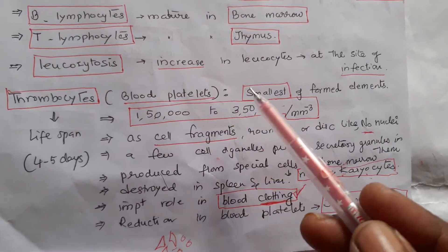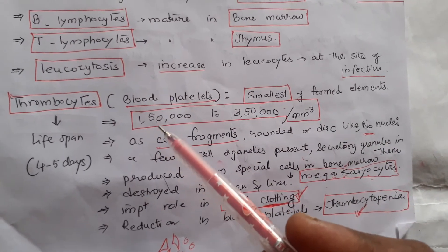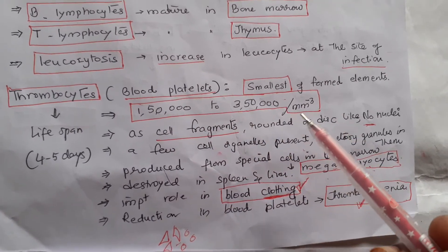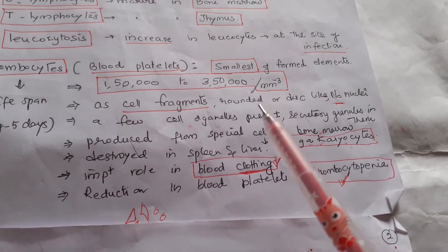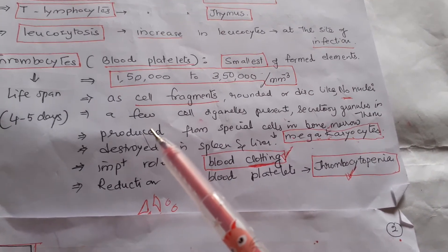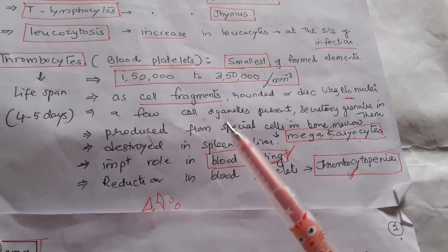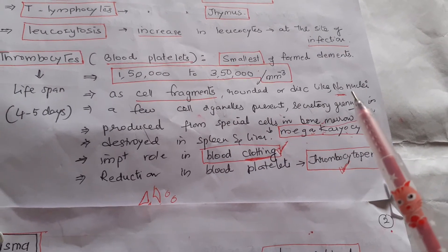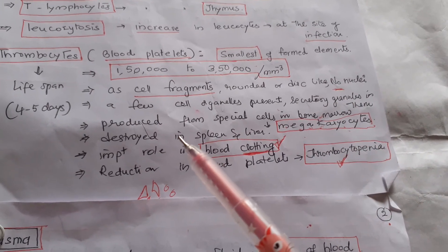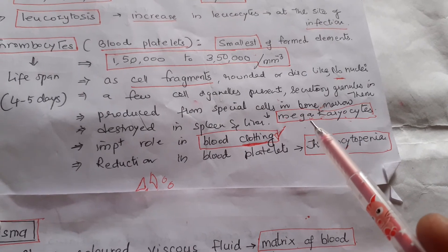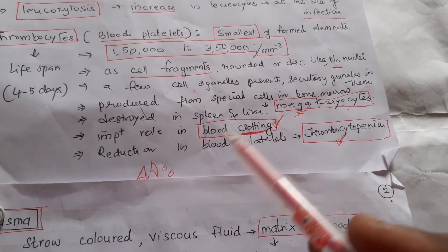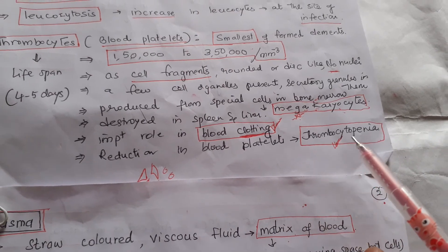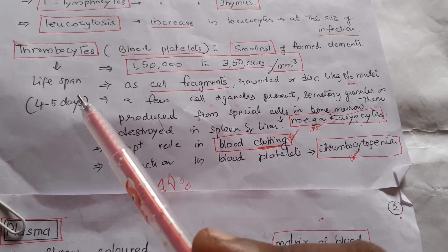Thrombocytes are blood platelets, the smallest of the formed elements, numbering 1,50,000 to 3,50,000 per cubic millimeter of blood. They are formed as cell fragments, rounded or disc-shaped, with no nucleus but a few cell organelles and secretory granules. They are produced from megakaryocytes in bone marrow and destroyed in the spleen and liver. They play a very important role in blood clotting. Reduction in blood platelets is called thrombocytopenia, which is a symptom of dengue fever. Their lifespan is about 4 to 5 days.